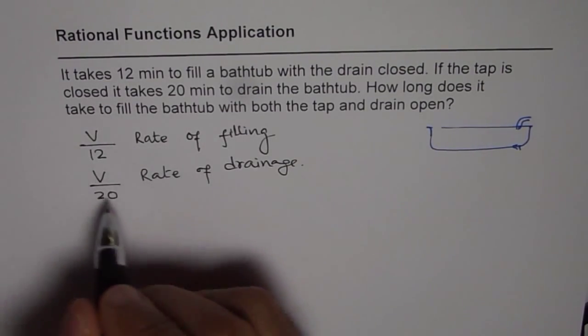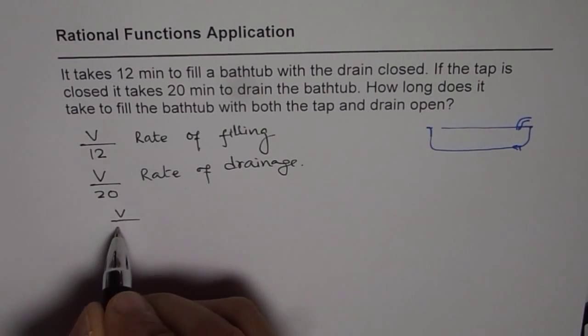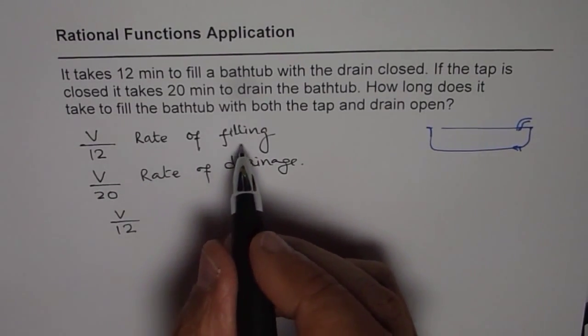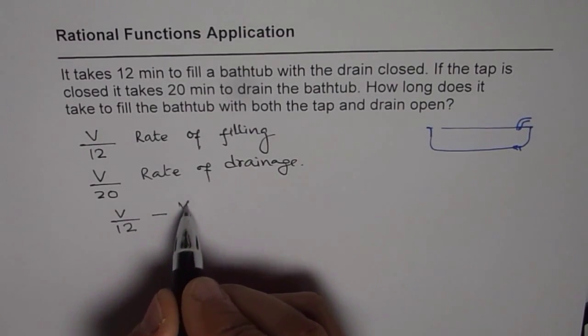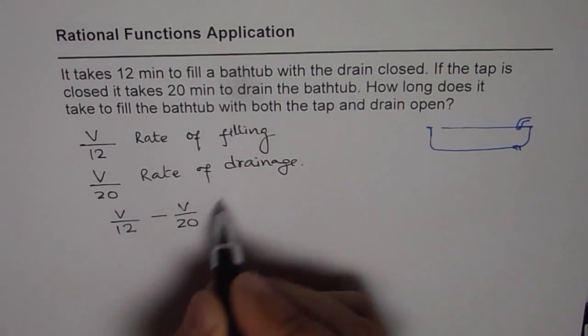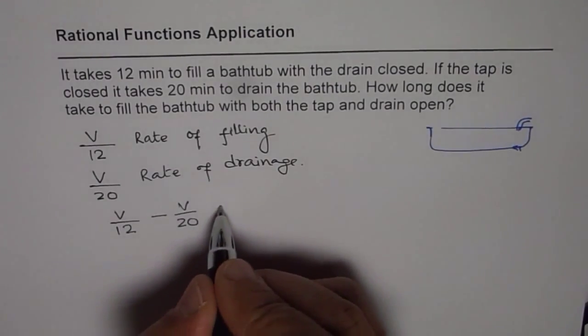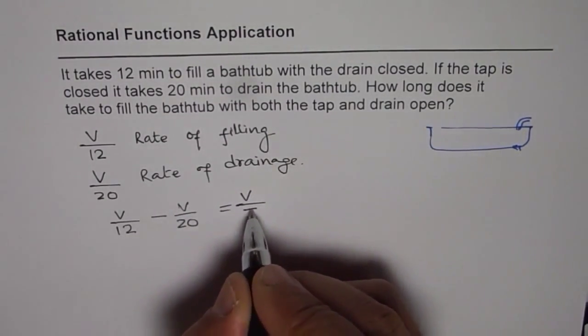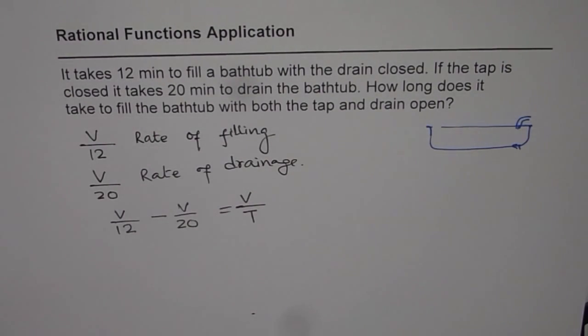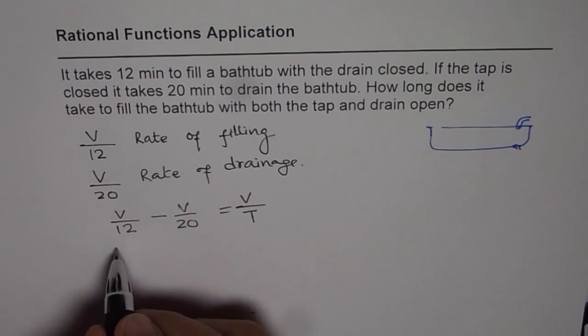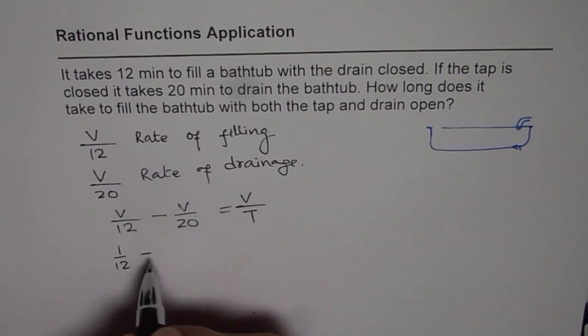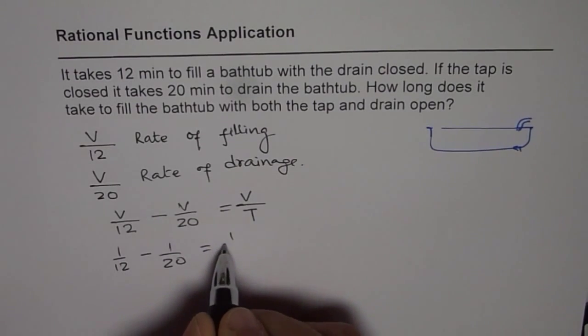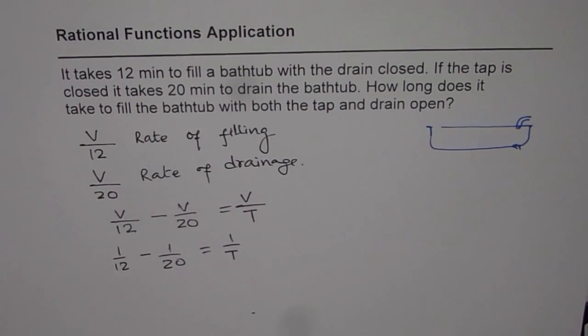So in that case, when they work together, then V over 12, that is when we are filling, minus V over 20, when we are taking away, that is water is being drained out, but ultimately the whole volume is filled and takes time T. Now V and V will cancel in the numerator. So we have 1 over 12 minus 1 over 20 equals to 1 over T.